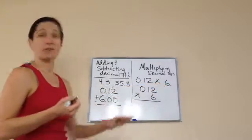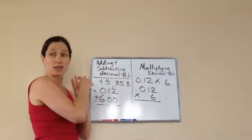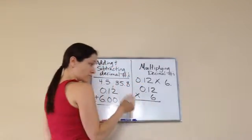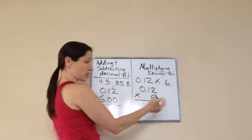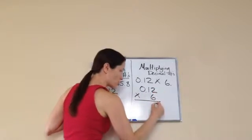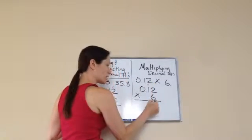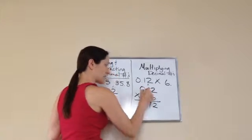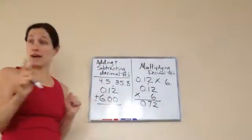But because we're working with decimal numbers, you just write the numbers just as they are. Now we're going to work the problem, so let me go in and just multiply. 6 times 2 is 12. Carry the 1. 6 times 1 is 6, plus 1 more is 7, and then 6 times 0 is 0.